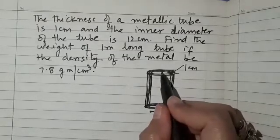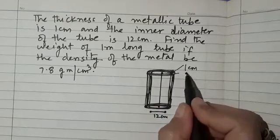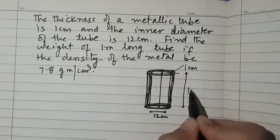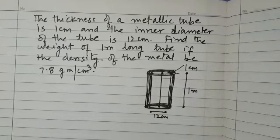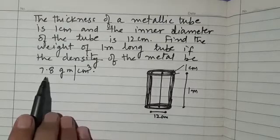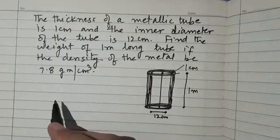Find the weight of the 1 meter long tube. That means the height of this tube is 1 meter long, so we need to find the weight. It is given that density of the metal is 7.8 grams per cubic centimeter.